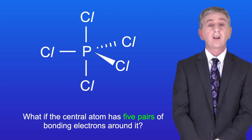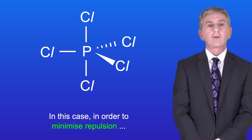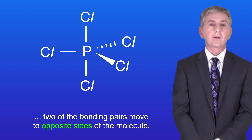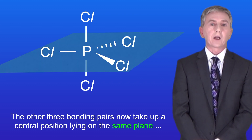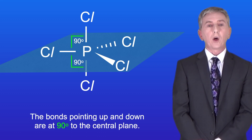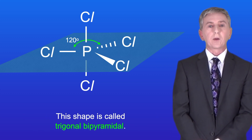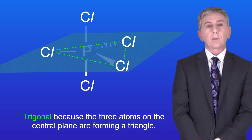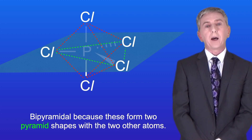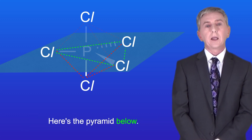If the central atom has five pairs of bonding electrons, a good example is phosphorus pentachloride. To minimize repulsion, two of the bonding pairs move to opposite sides of the molecule, while the other three lie on a central plane spread as far apart as possible. There are two bond angles: the bonds pointing up and down are at 90 degrees to the central plane, whereas the angle between the bonds on the central plane is 120 degrees. This shape is called trigonal bipyramidal — trigonal because the three atoms on the central plane form a triangle, and bipyramidal because they form two pyramid shapes with the two axial atoms.